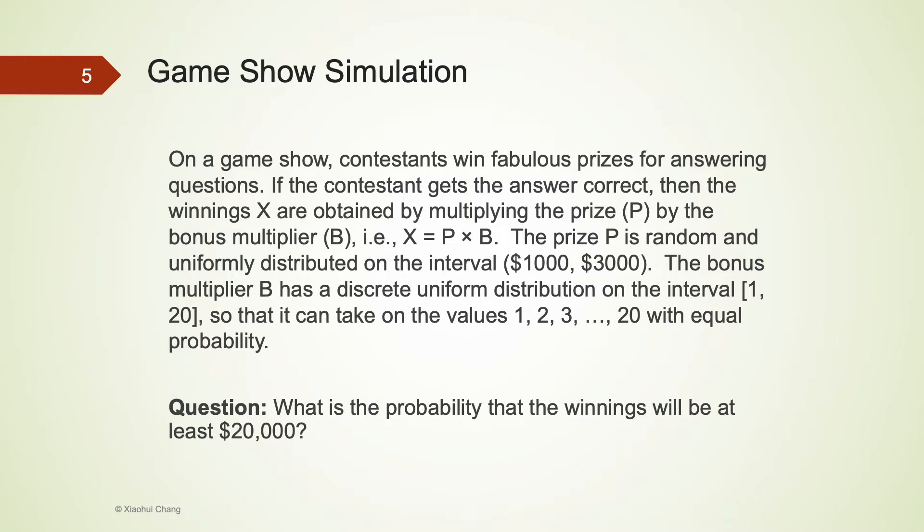That means the likelihood of B taking the value of 1 is 1 over 20, and the likelihood of B taking the value of 20 is also 1 over 20. The question for us to consider here is, what is the probability that the winnings, which is X, is going to be at least $20,000.